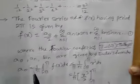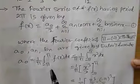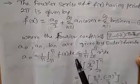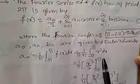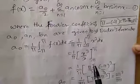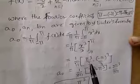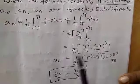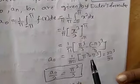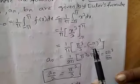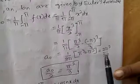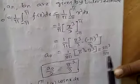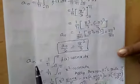The Fourier coefficients are given by Euler's formulae. a₀ = (1/π) ∫ from −π to π of f(x) dx = (1/π) ∫ from −π to π of x² dx. The integration of x² is x³/3, evaluated from −π to π. This gives (1/π) × (2π³/3), so a₀ = 2π²/3, and therefore a₀/2 = π²/3.